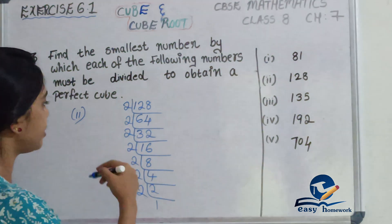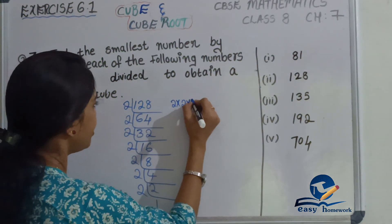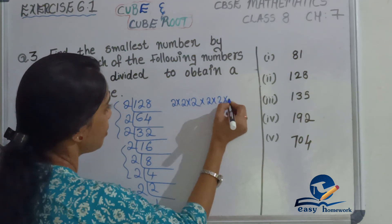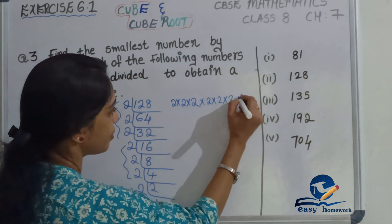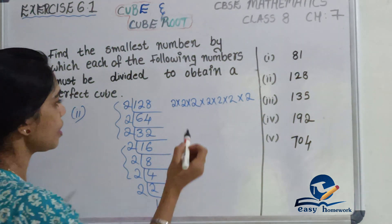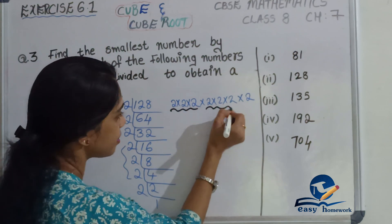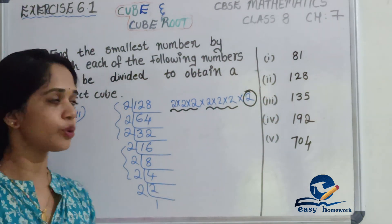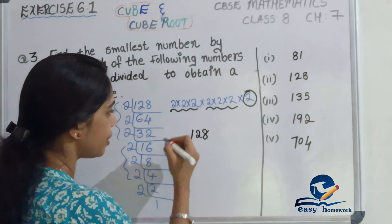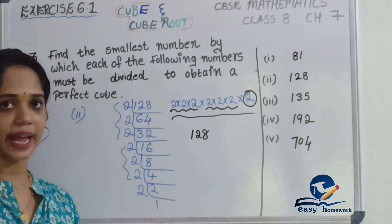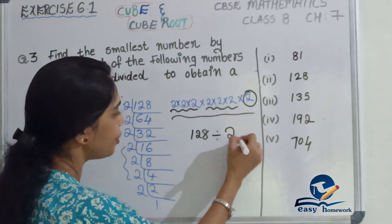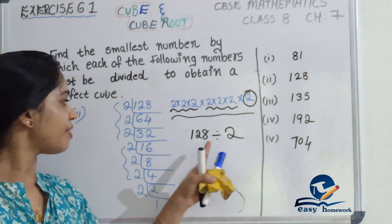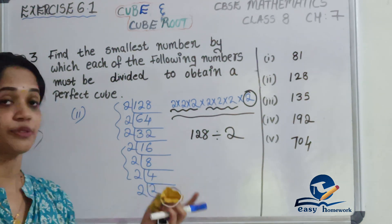Now we have the prime factorization of 128. Using prime factors, we form triplets: 2 × 2 × 2, then another 2 × 2 × 2, and one extra 2 remaining. So we divide 128 by 2 to get a perfect cube.